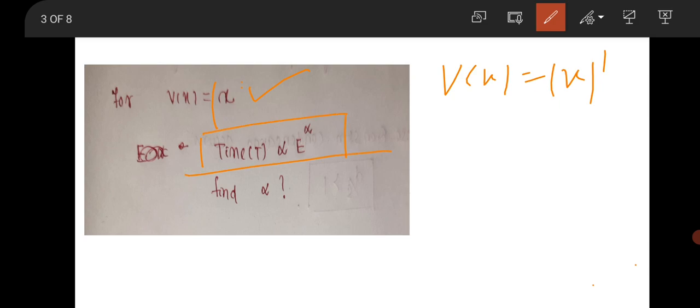How does time period vary with energy? If V(x) varies as x to the power n, then time period will vary as energy to the power (2-n)/(2n). Here n equals 1 because the power of x is 1.